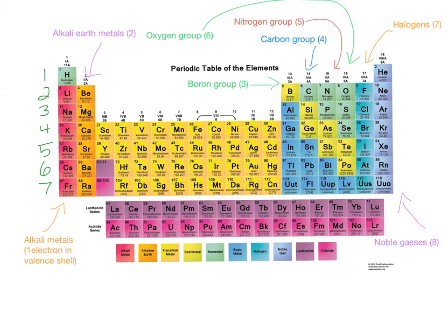To round out the table, columns three to twelve in the center consist of the transition metals, which are similar in the way they look and act. The two rows at the bottom are called the lanthanides, after lanthanum number 57, and the actinides, after actinium number 89.